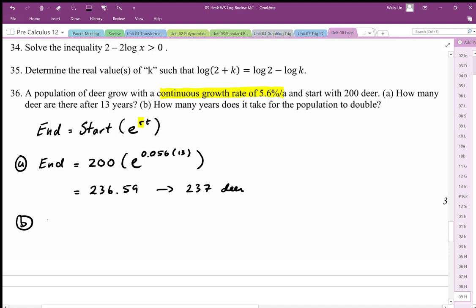So we have e to the power 0.056—that's our continuous growth rate—expressed in the exponent, and then we're gonna solve for the value of t.